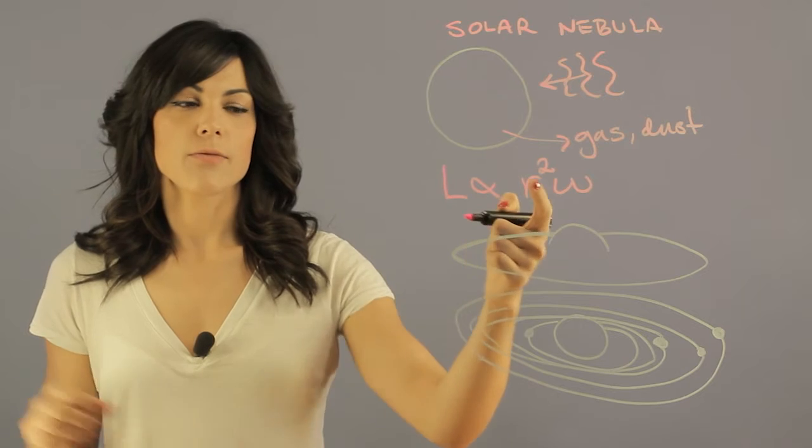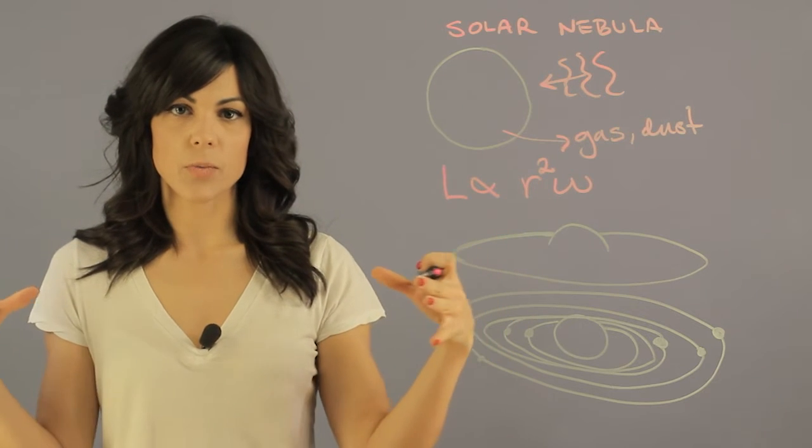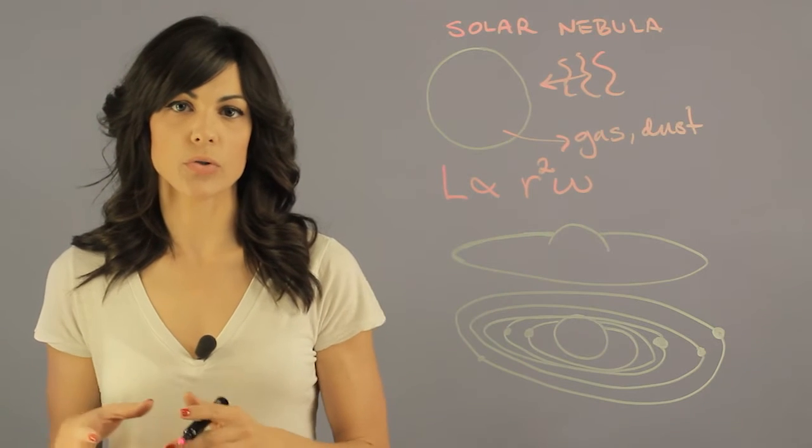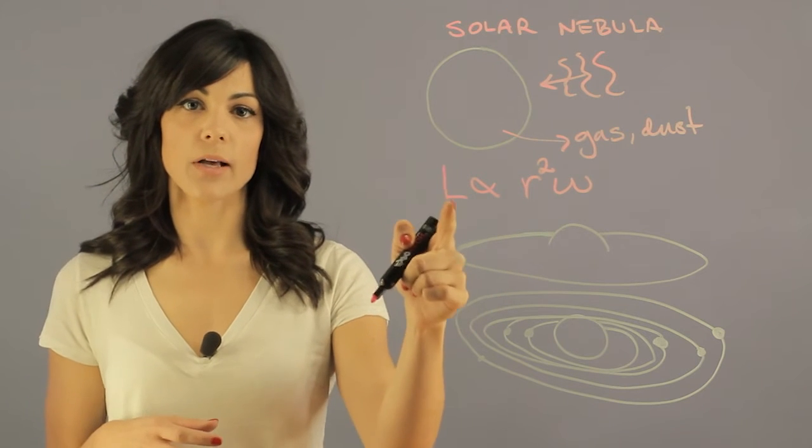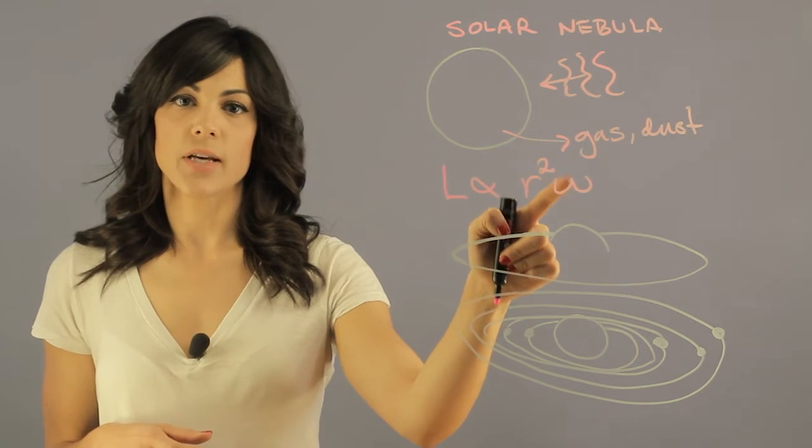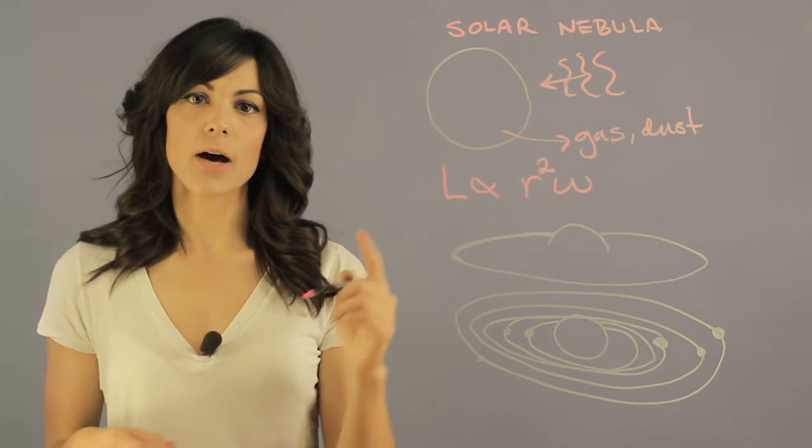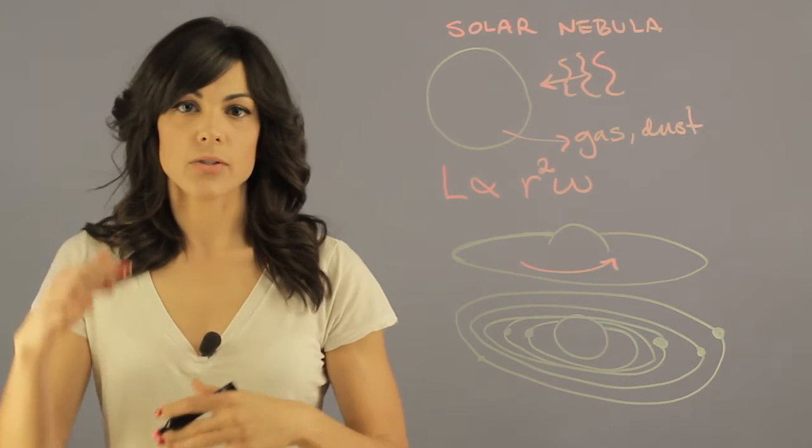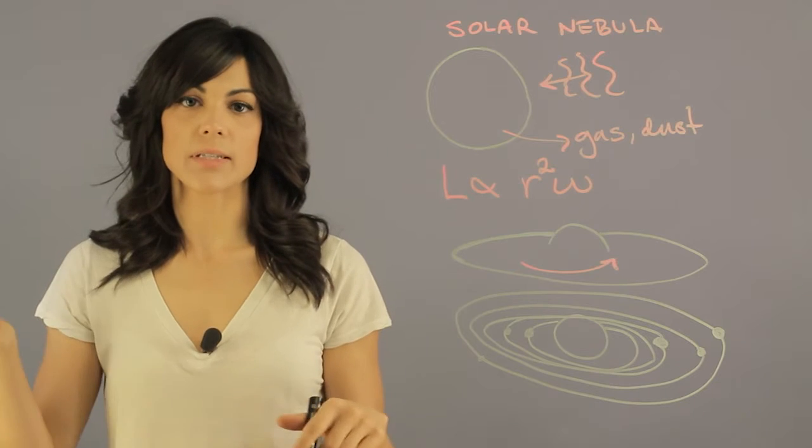So that means that if your cloud, if the radius is becoming smaller and smaller and smaller, it has to rotate a lot faster in order to conserve this momentum. So in order for L not to change, and R is changing, this has to get higher. So that means that the cloud will start to spin, and this spinning is actually going to flatten the cloud into sort of a disk.